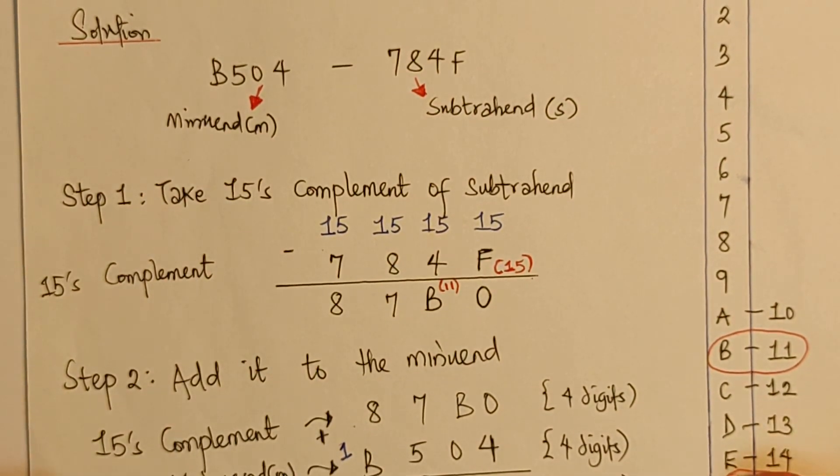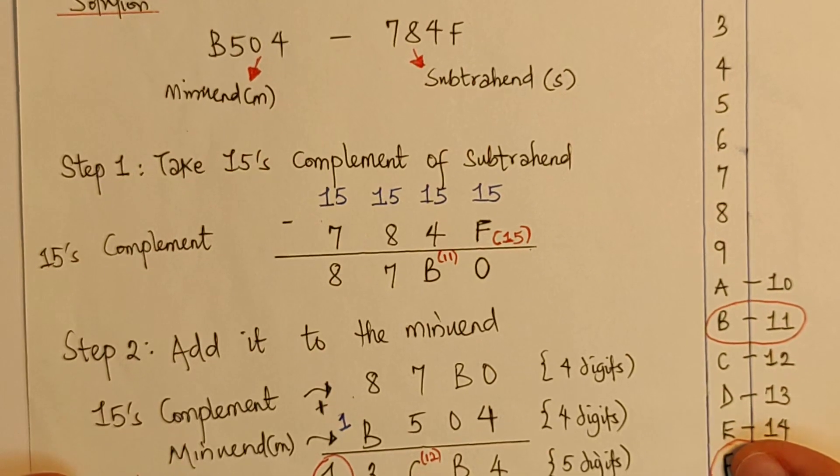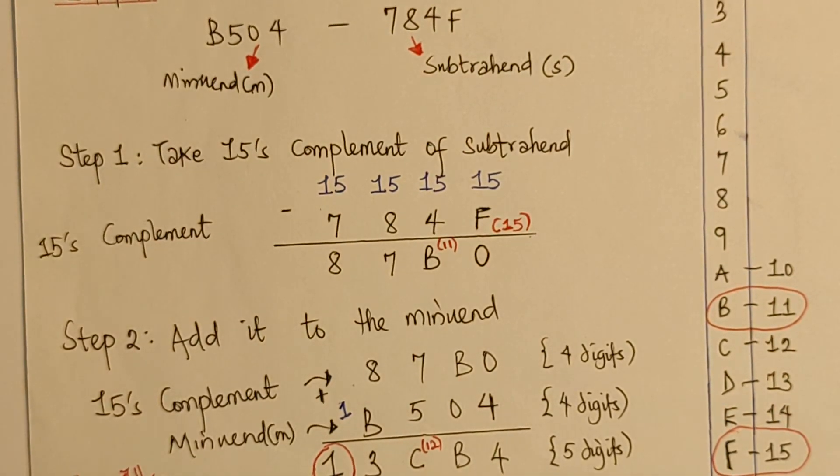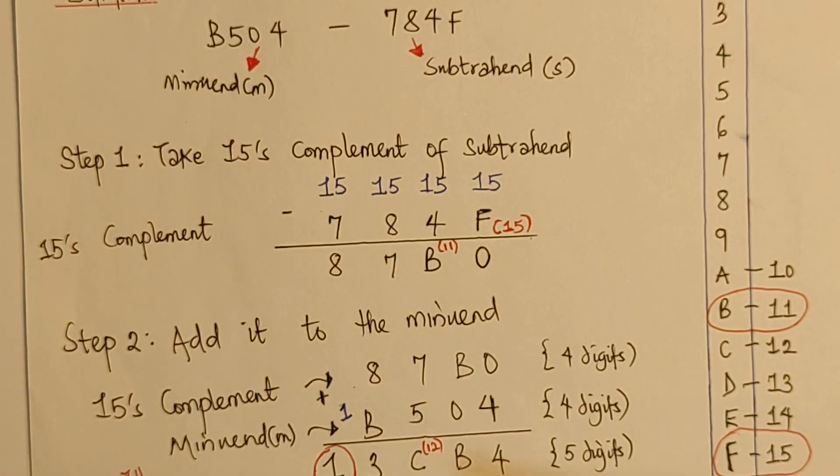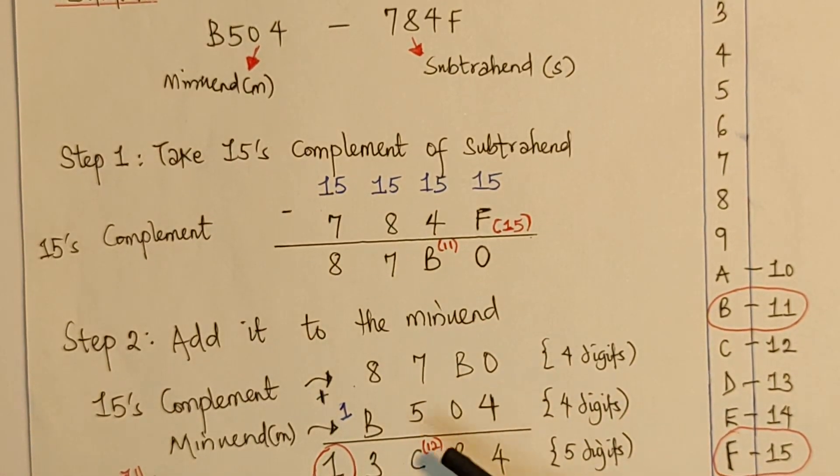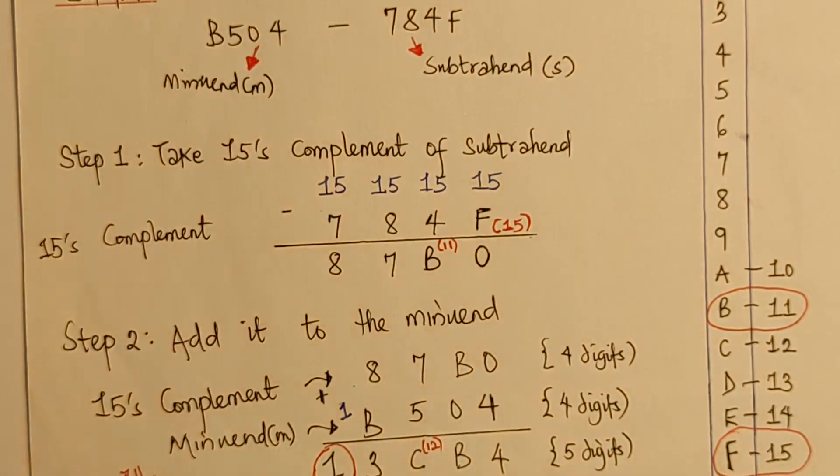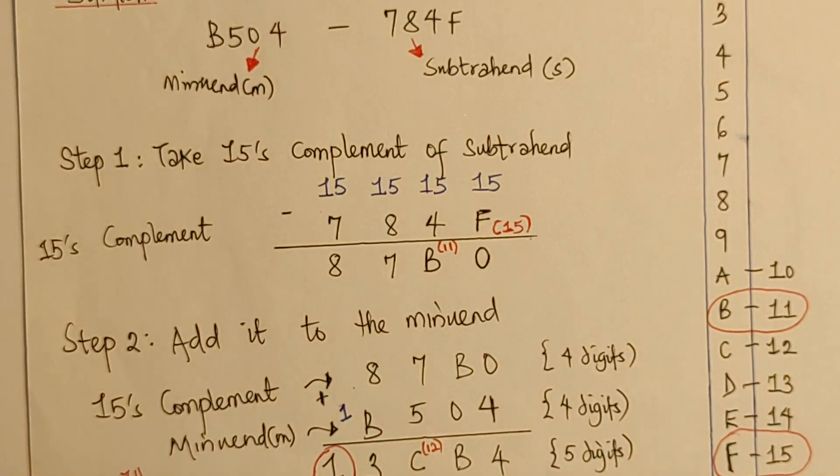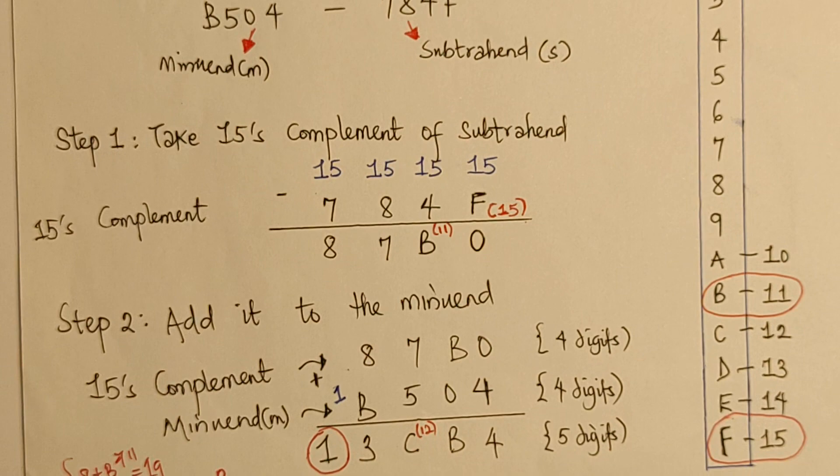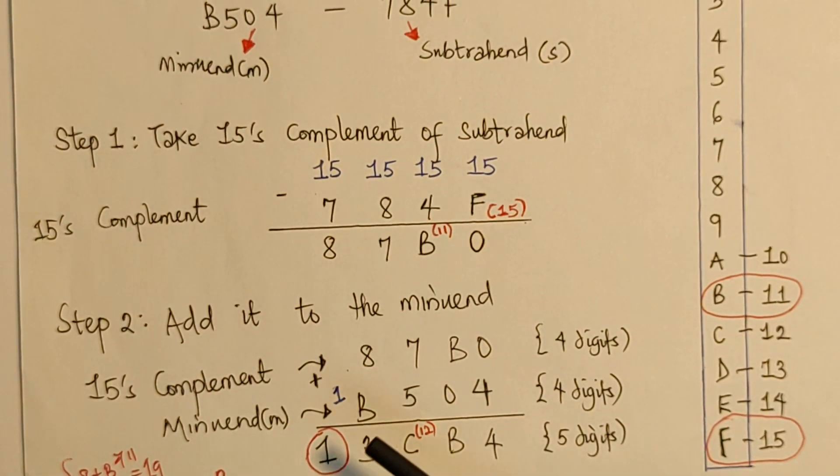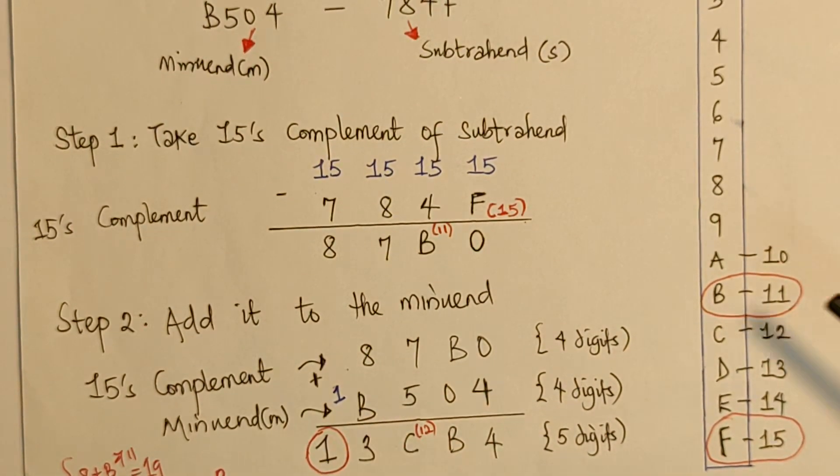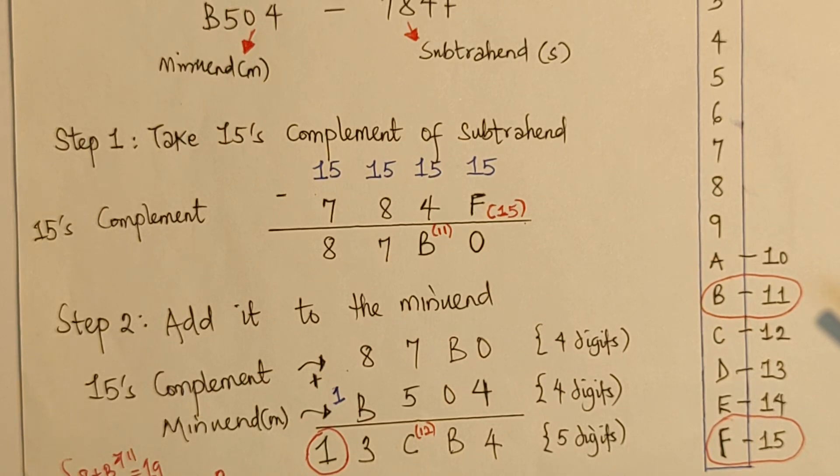So, we have 0 plus 4 to be 4, B plus 0 to be B, 7 plus 5 to be 12, but in hexadecimal, we are going to represent that as C. And next, we have 8 plus B, remember, B in this case is 11, so that's to say 8 plus 11 is 19.